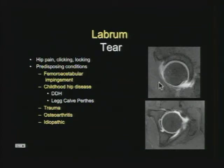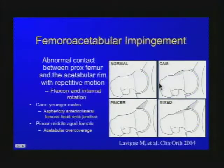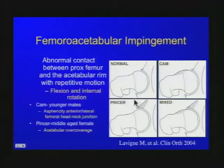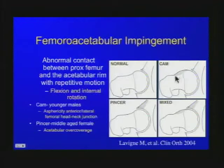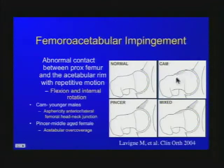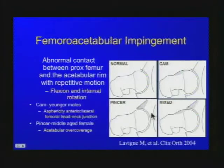FAI occurs when the femur and acetabulum hit abnormally against each other, causing labral tears, cartilage damage, and herniation pits. If it's on the femoral side — at the femoral head-neck junction anteriorly or laterally with asphericity — this is called cam impingement, like the cam of a car. That asymmetric bump hitting a normal acetabulum causes labral tears by hitting prematurely. Cam impingement is seen especially in young males.